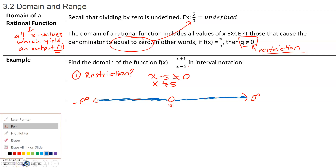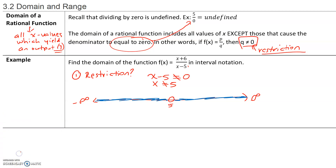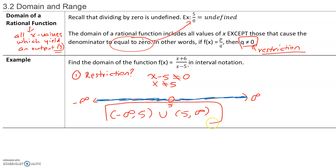Here's how we write that in interval notation. To the left of 5, we have the set of numbers from negative infinity to positive 5. To the right of 5, we have the set of numbers from 5 to infinity. Because this is a disjoint set, we use the union symbol to indicate that both sets are part of the same solution. So our domain is: (−∞, 5) ∪ (5, ∞).